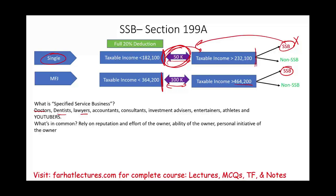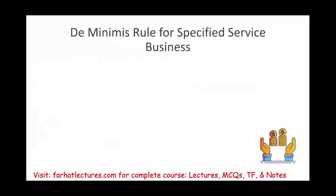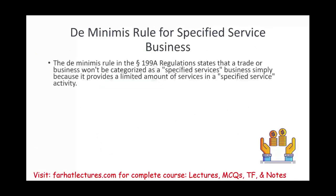Any business where you as the individual are the business itself — your reputation, expertise, abilities, and initiative — is a specified service business. Engineers and architects are not considered SSBs. For SSBs, the IRS has a de minimis rule: a trade won't be categorized as a specified service business simply because it provides a limited amount of specified service activity.